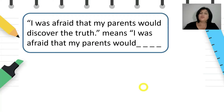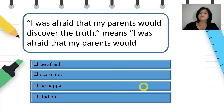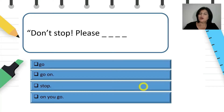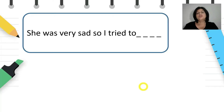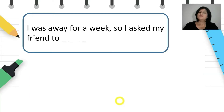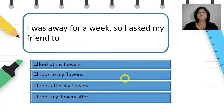'I was afraid that my parents would discover the truth' means 'I was afraid that my parents would find out.' Don't stop, please — go on. She was very sad, so I tried to — cheer her up. I was away for a week, so I asked my friend to look after my flowers.